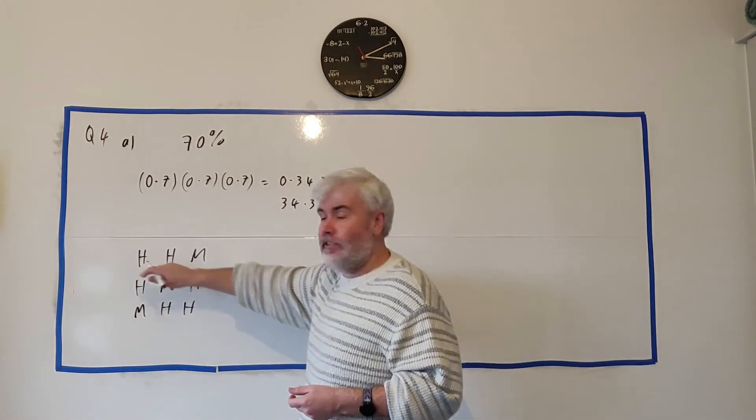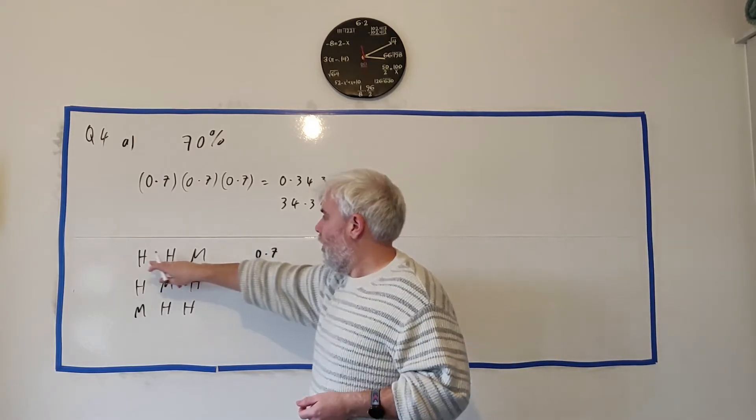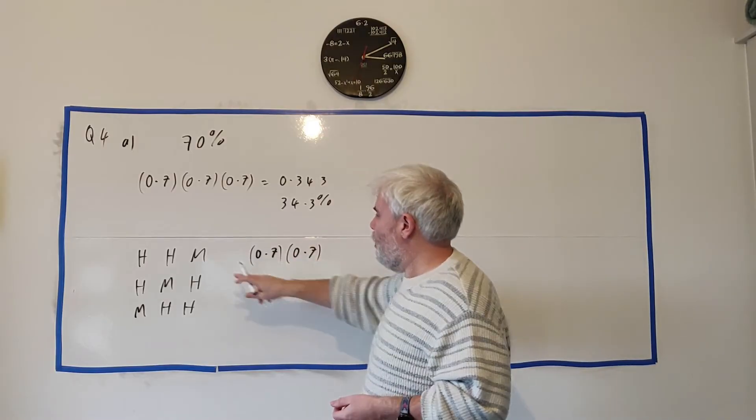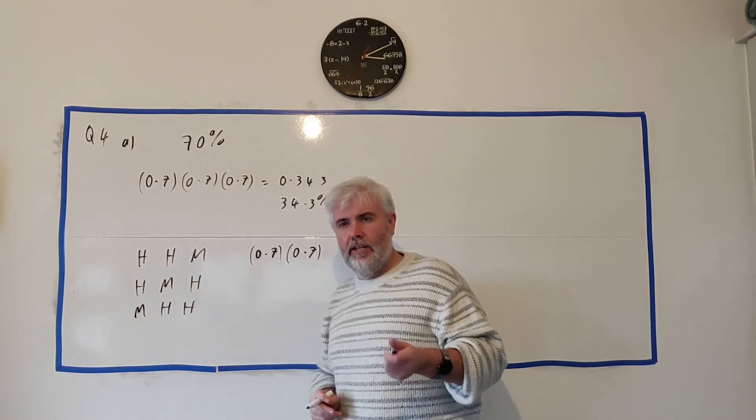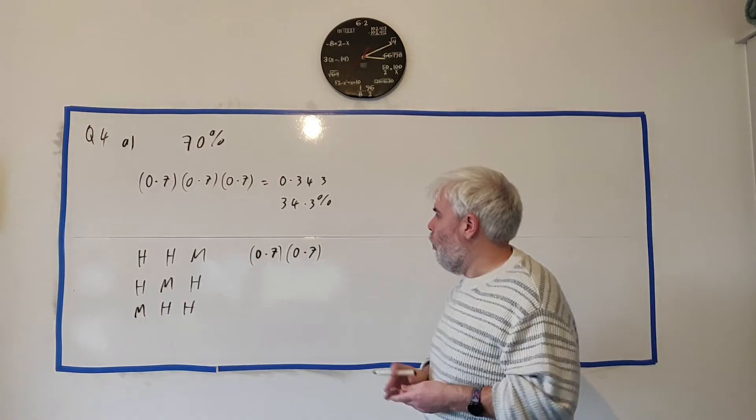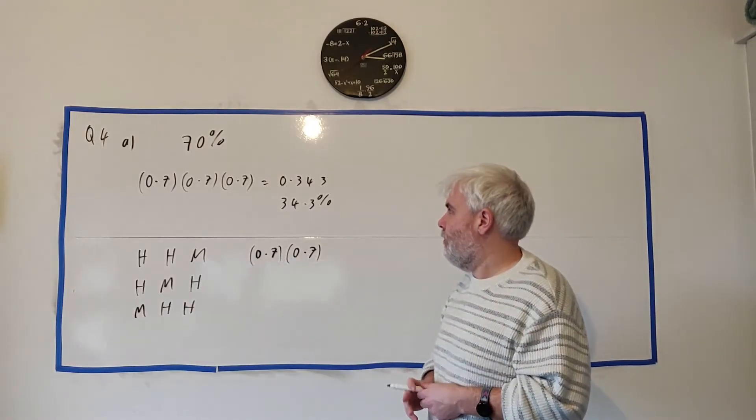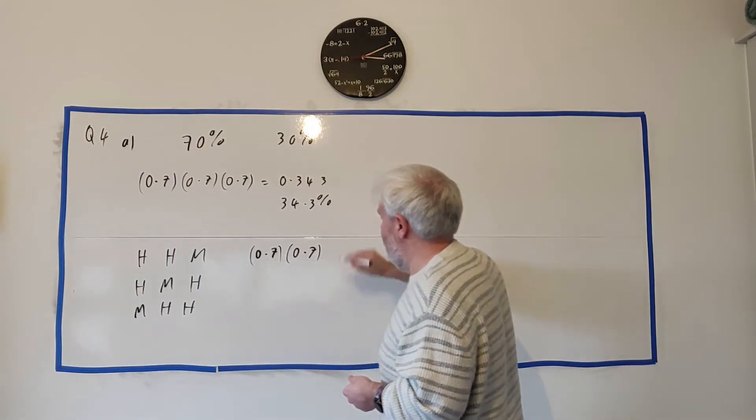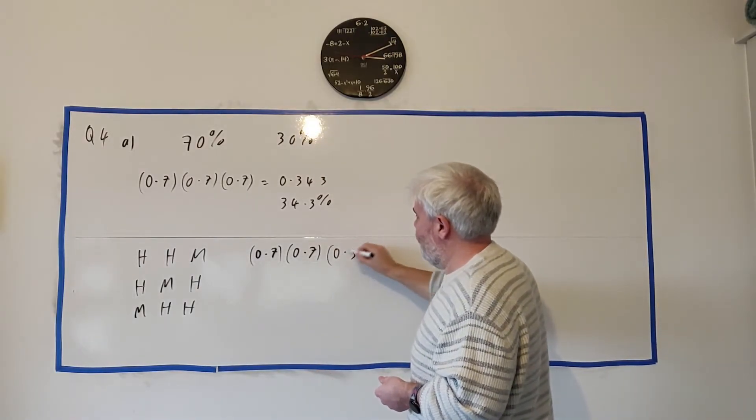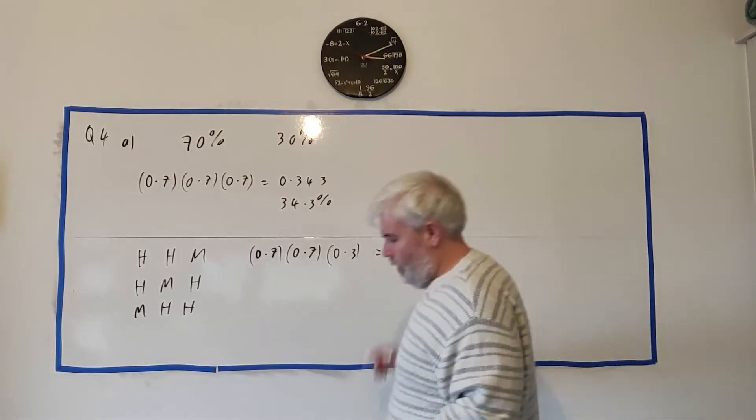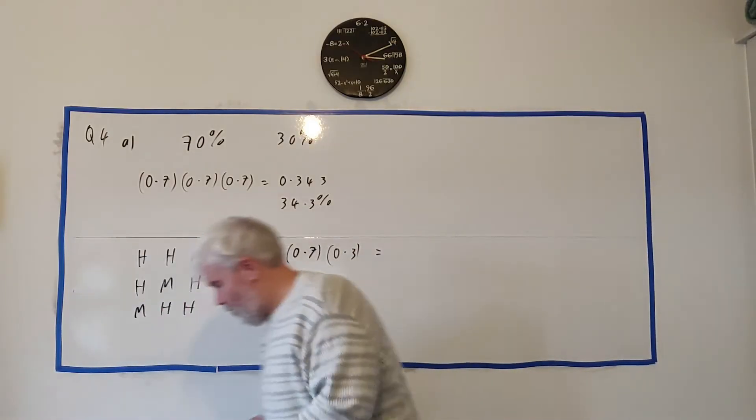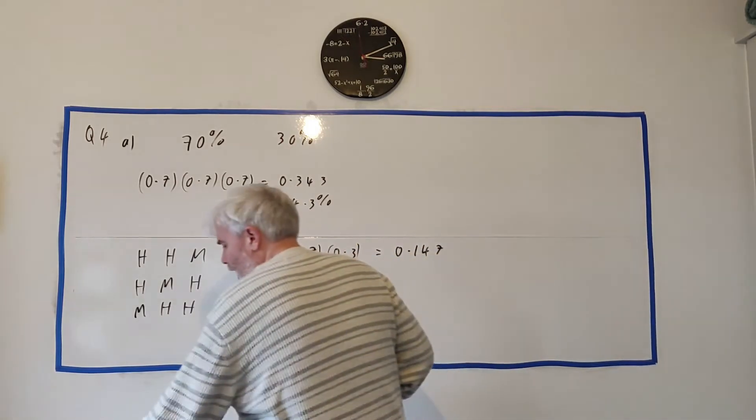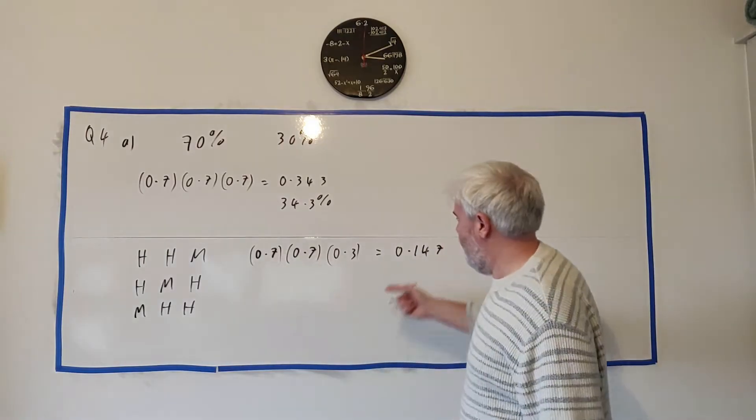The probability that he makes a shot is 0.7. The probability he makes another one, multiply by 0.7. The probability that he misses, now here's the first tricky part. What's the probability he misses a shot? Probability he makes it is 70% so the probability he misses is 30% or 0.3. And then we can multiply this one out, we get 0.147.